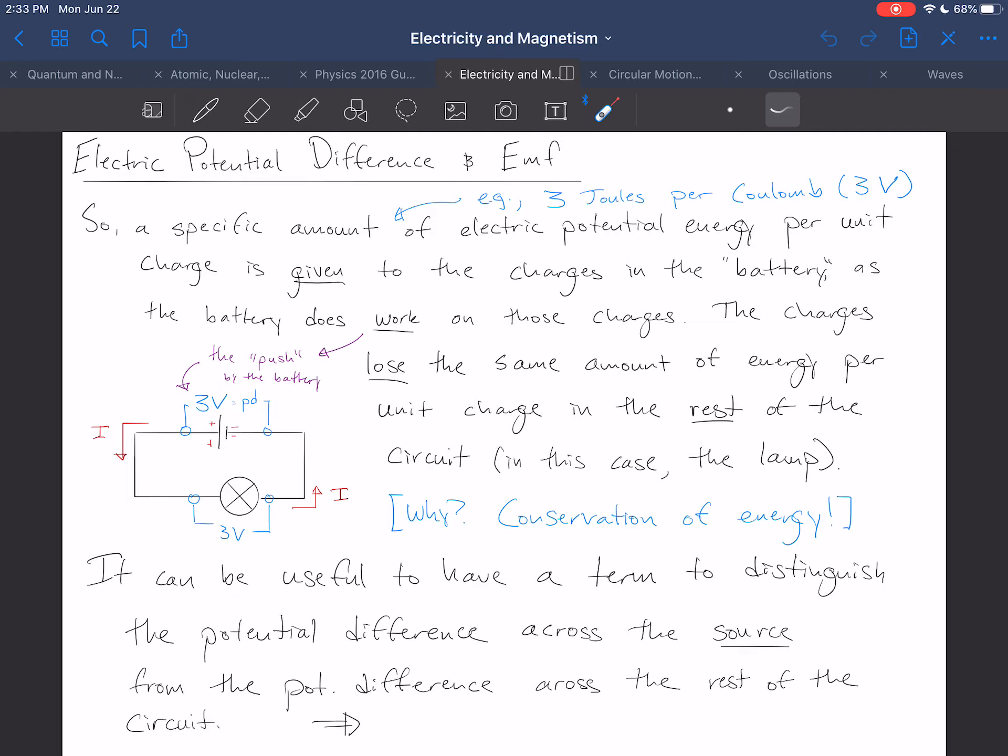And what does that mean? It means there is a specific amount of electric potential energy per unit charge given to the charges in the battery, as the battery is doing work on those charges. What the battery does, what makes it a battery, is that it is doing work on those charges and giving them electric potential energy. How much? Well, if it's 3 volts, then that would be 3 joules per coulomb of charge.